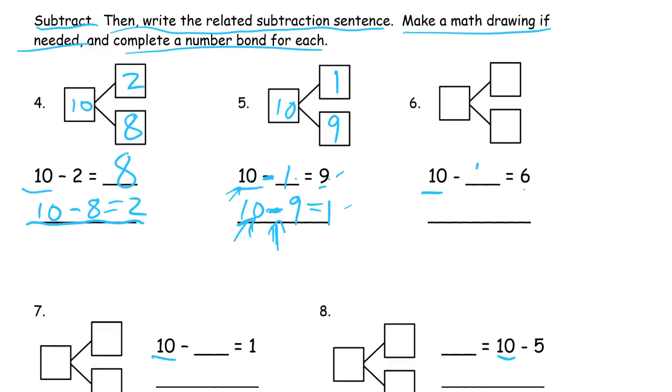So here's a 6, parts of 10. I know there's a 4 that's missing somewhere. So 10 minus 6 equals 4. And our number bond is going to be the total of 10 with parts of 6 and 4.